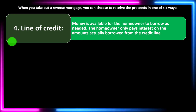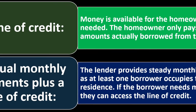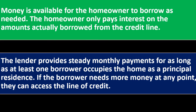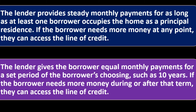Number four: line of credit — money is available for the homeowner to borrow as needed, kind of like a credit card. The homeowner only pays interest on the amounts actually borrowed from the credit line. Number five: equal monthly payments plus a line of credit — the lender provides steady monthly payments and if the borrower needs more money at any point, they can access the line of credit. Number six: term payments plus a line of credit — equal monthly payments for a set period, with access to a line of credit if more money is needed during or after that term.